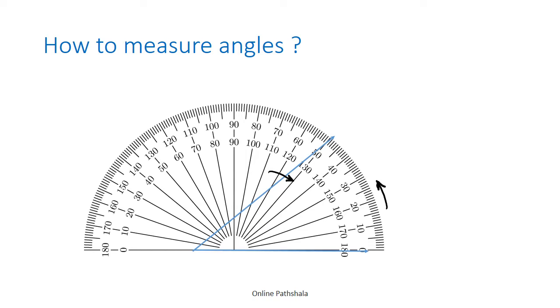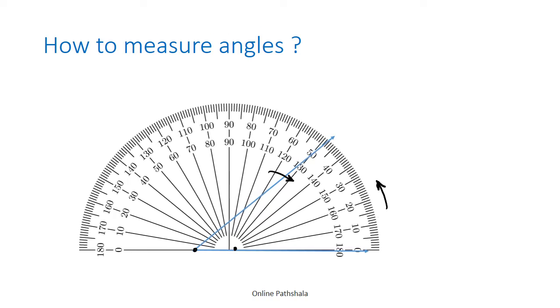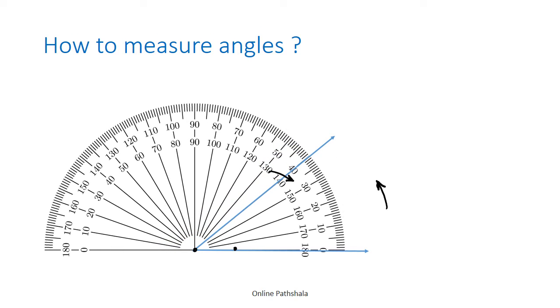Let's try to measure an acute angle. The first rule to measure an angle is that the center of the protractor should align or overlap with the vertex of the angle. The second rule is the baseline of the protractor should rest on one of the arms.